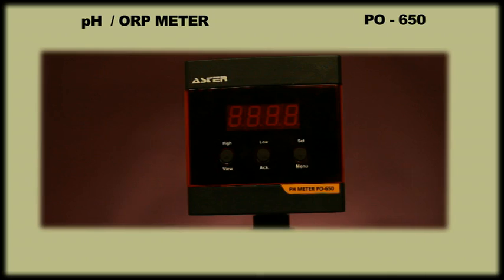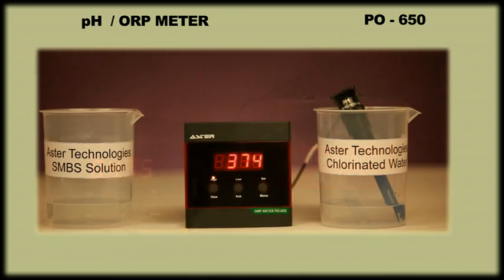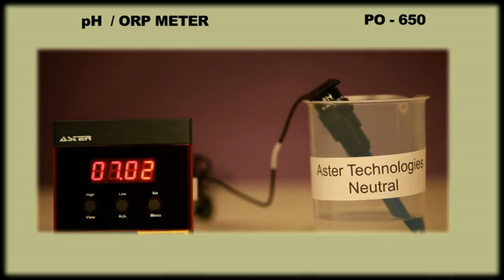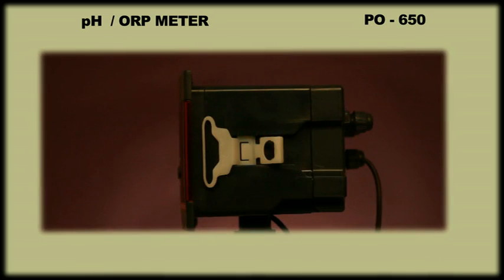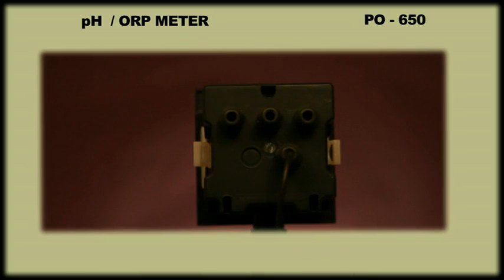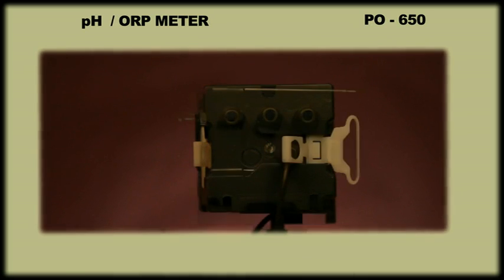PO650 is an indicator to display pH or ORP depending on the type of electrode used as required by your process. It is also available with advanced options of automatic temperature compensation, options of either RS-485 or isolated 4 to 20 mA output.